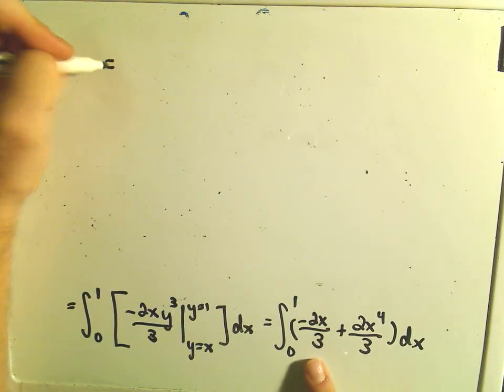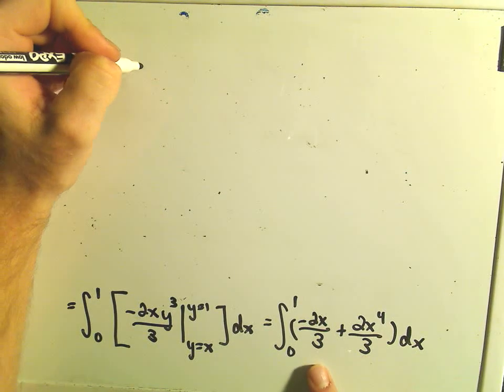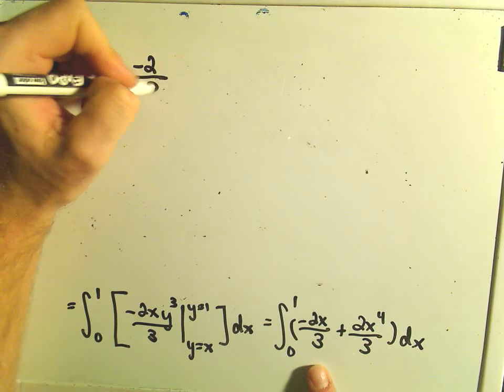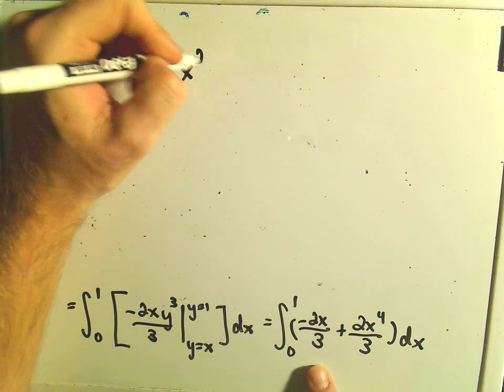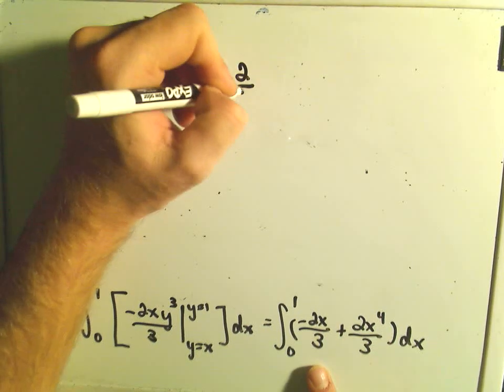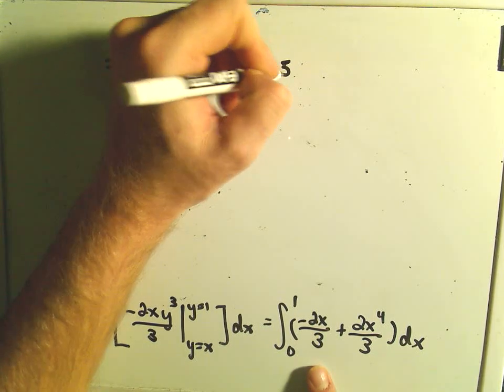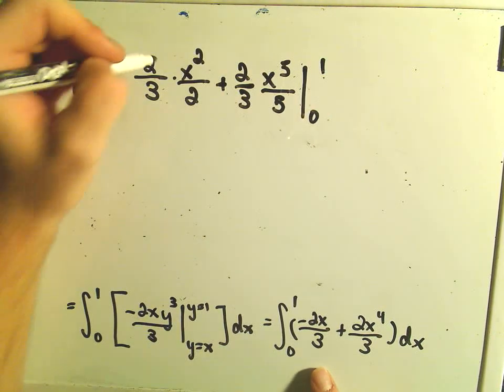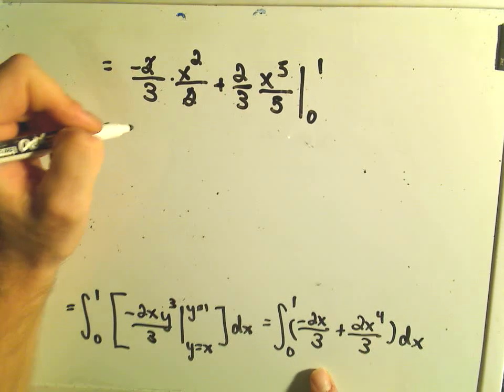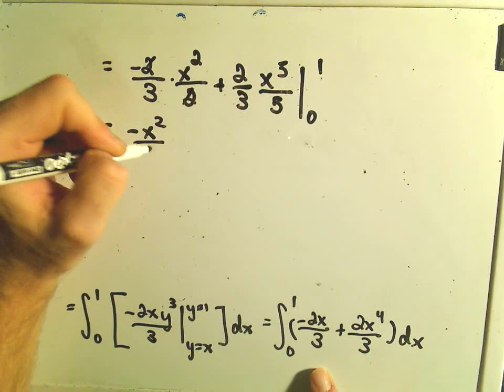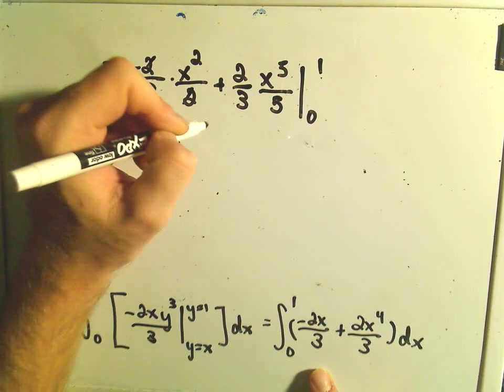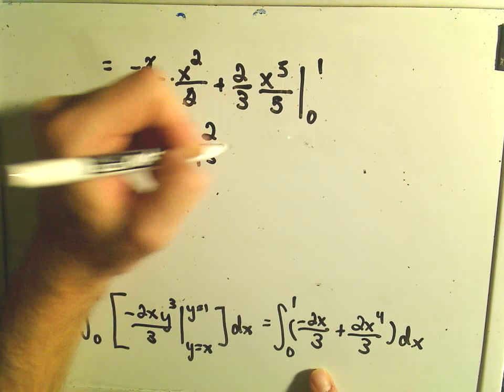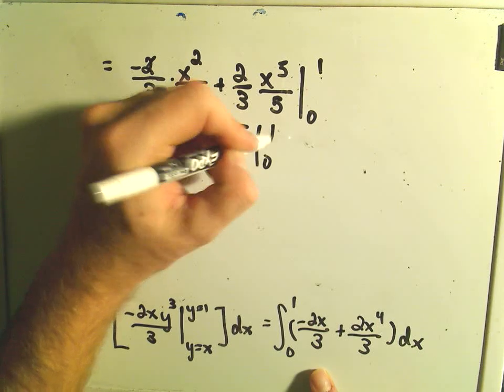Let's see, so the negative 2 3rds, looks like we'll get, so I always just do it. So negative 2 3rds, we'll get x squared over 2, plus 2 3rds, x to the 5th over 5. We have to evaluate that from 0 to 1, so okay, the 2's cancel. So that's negative x squared over 3, it looks like 2 over 15, x to the 5th, from 0 to 1.